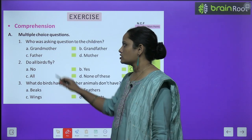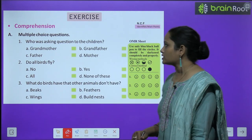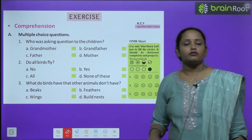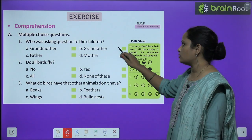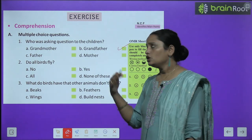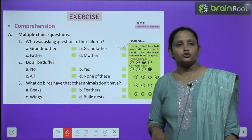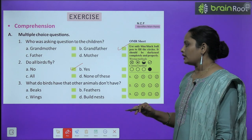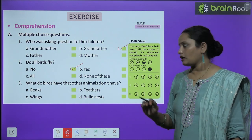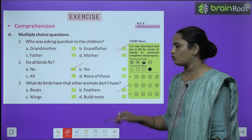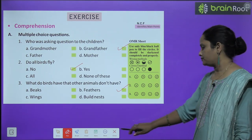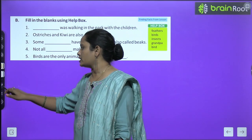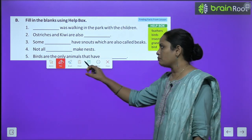Now let's move on to the book exercise — Comprehension A, which is multiple choice questions. The first one is: Who was asking questions to the children? Grandmother, grandfather, father, or mother? He was grandfather. Do all birds fly? No. What do birds have that other animals don't have? That is feathers.